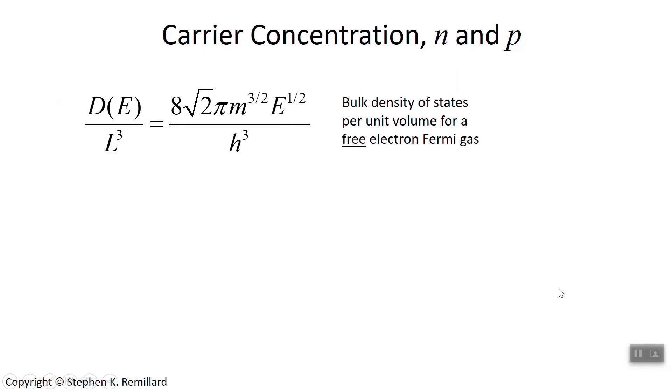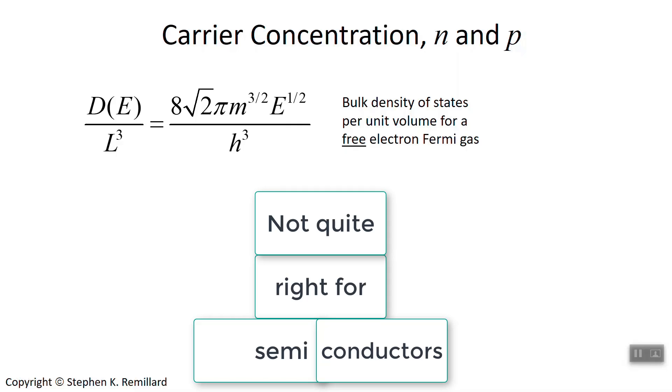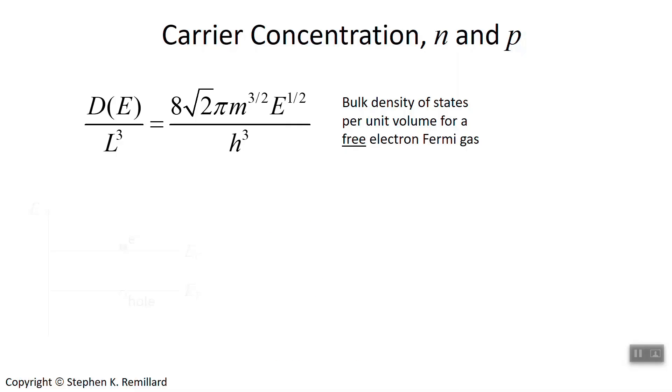For a semiconductor, this expression of the density of states is a little problematic because this energy E is continuous, and so the density of states is continuous from energy equals zero to infinity. But for a semiconductor, first of all, there's the band gap, where you don't have any density of states, and secondly, you don't have conduction electrons below the conduction band edge. And so we need to modify the expression a little bit to have that density of states starts not at energy equals zero, but at energy equal to E sub c, the conduction band edge.